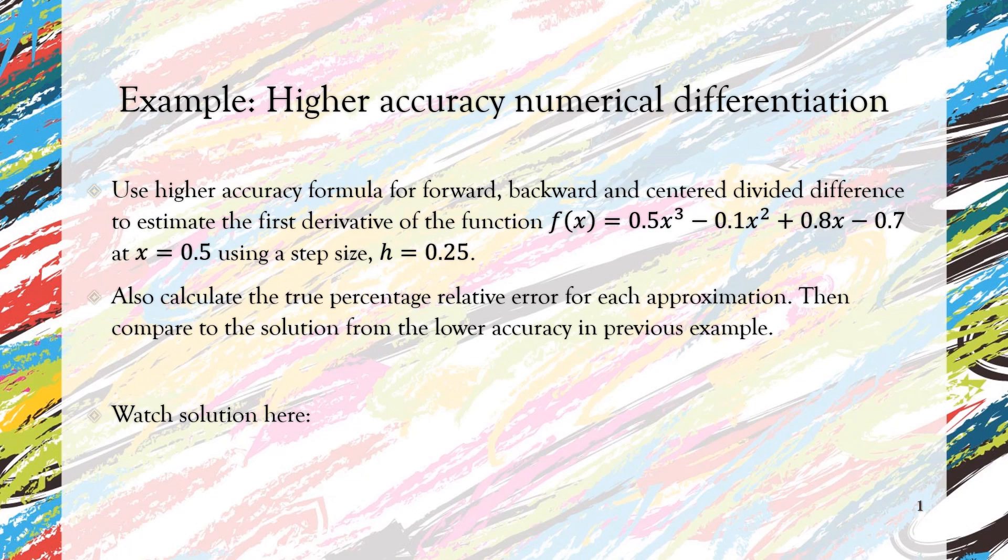But this time we are going to use a higher accuracy BDD, FDD, and CDD in which if we understand the background of this higher accuracy formulation, it was derived from the Taylor series expansion up to the second term. So now we are going to use this higher accuracy numerical differentiation and solve it at x equal to 0.5 with the step size 0.25.